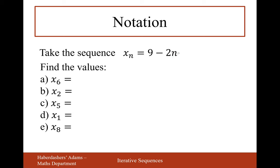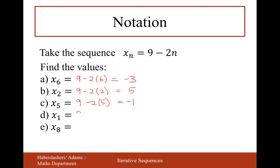One more with a formula. For the first one, n is 6: 9 minus 2 lots of 6 - that's 9 minus 12, which is minus 3. For n = 2: 9 minus 4 is 5. For n = 5: 9 minus 10 is minus 1. For n = 1: that would be 7. For n = 8: 9 minus 16 is minus 7.